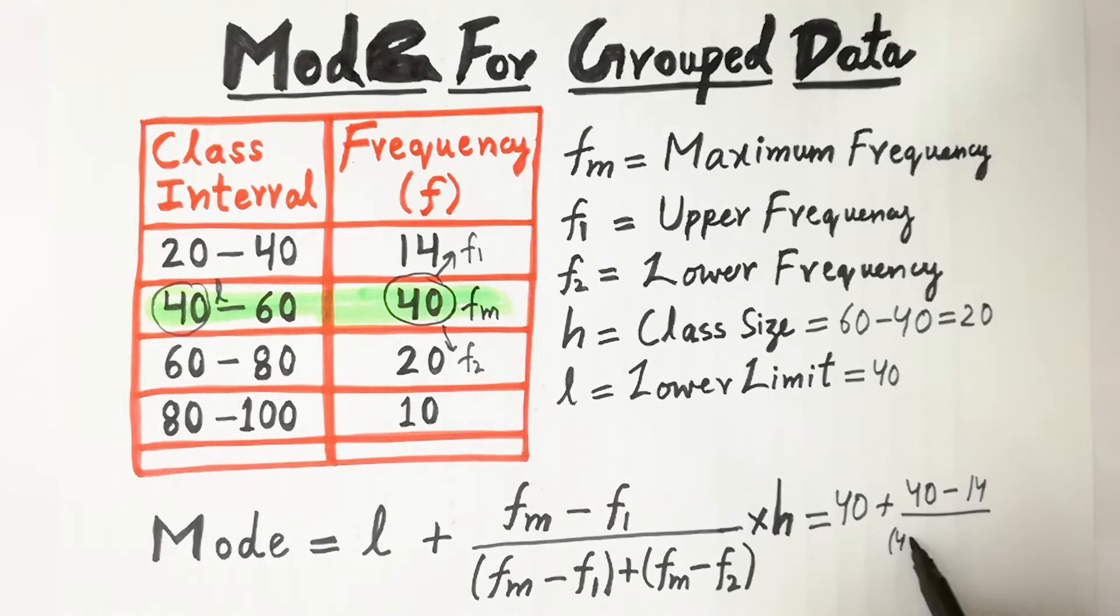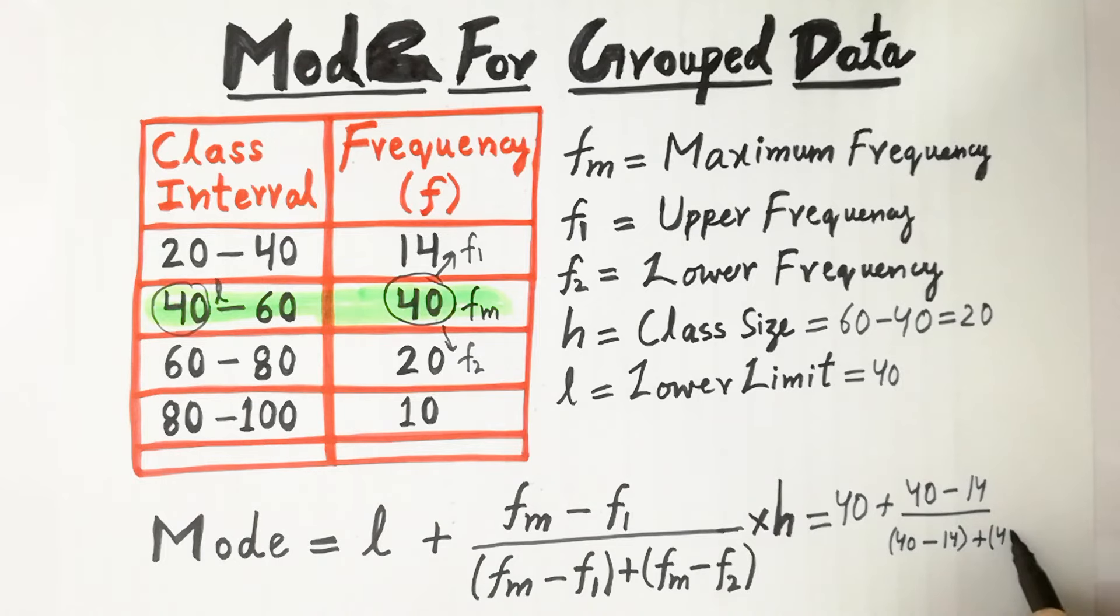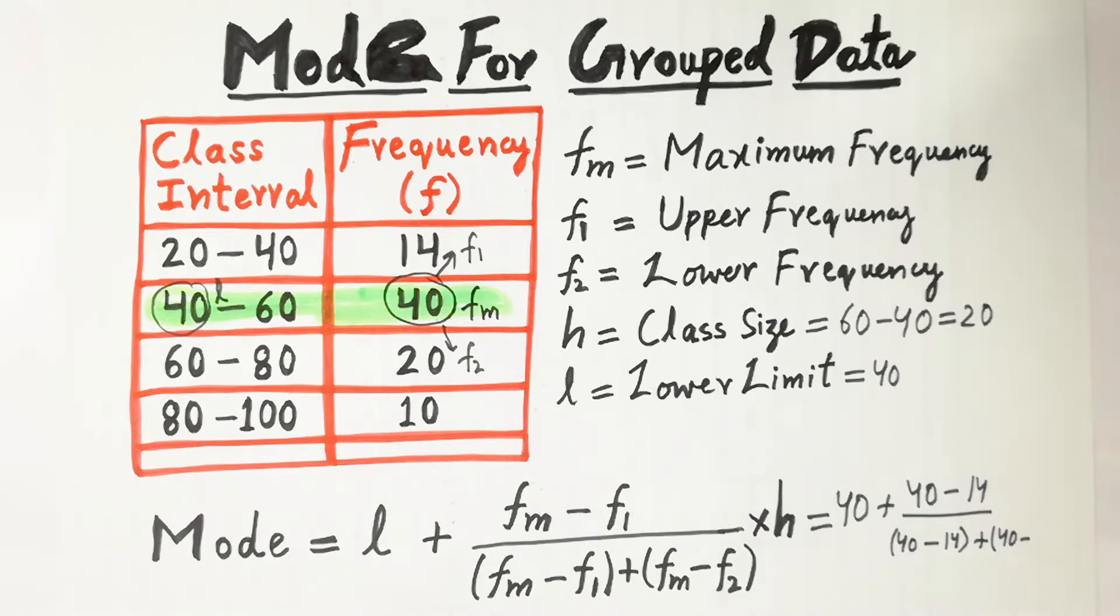same as it is, 40 minus 14, plus Fm. And next, Fm is given here, 40, minus F2 is here, 20. Multiply by H, H is the class size, which is 20.